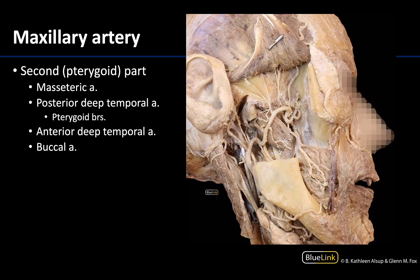Usually the most proximal branch of the second part is the masseteric artery, which is the case here. In this dissection it's been cut pretty close to the source so you don't really see where it's going, and that makes sense because the masseter muscle has been completely removed. This artery will accompany the masseteric nerve through the mandibular notch to enter the deep portions of the masseter muscle — we've seen that in some other videos.